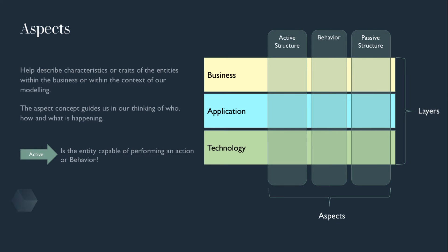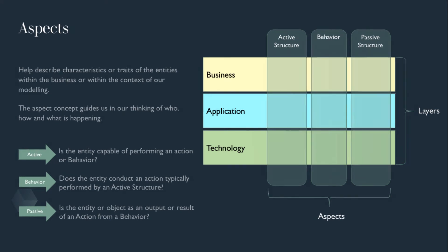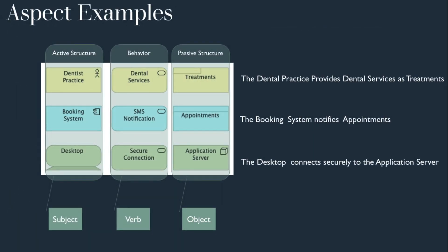The active structure: who or what can or does something. Behaviour: what is the action being performed. And passive: who or what is the action being done to, and what is the result or output of that action. In our normal language, we use the construct of subject, verb and object in our everyday speech. So the active structure can be thought of as the subject, the behaviour as the verb, and the passive structure as the object.